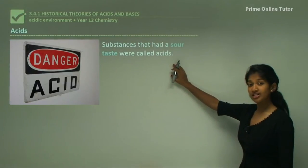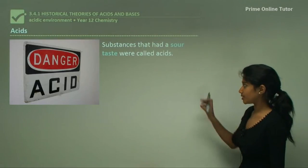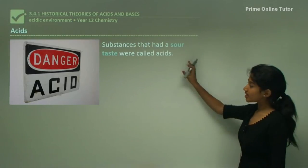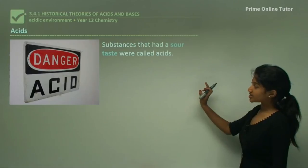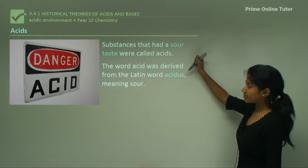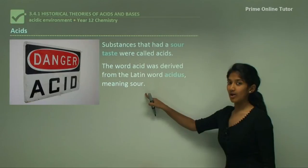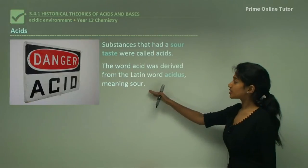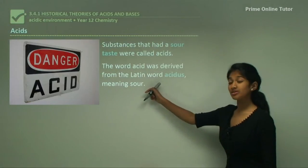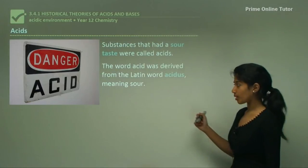For example, lime or lemon — they're called acids because of their sour taste. The word acid was derived from the Latin word 'acidus', which means sour. So clearly the word was derived from its physical or observable property.